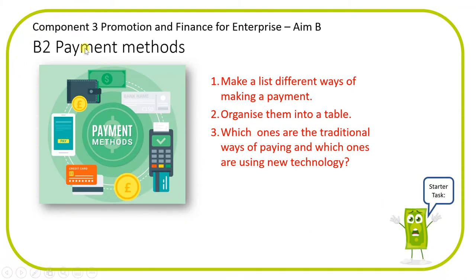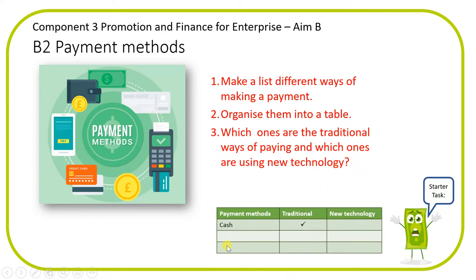For the starter task, make a list of different ways of making a payment. Think about when you go into a shop or supermarket first, then consider payments between businesses, like the kind of payments Tesco's might make to their farmers. Organise them into a table, ticking which are traditional ways of paying and which use new technology. You should be able to get up to about five or six different payment methods.